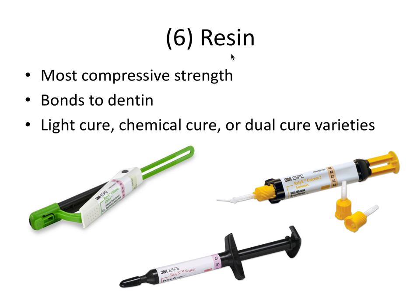Our last category is the resin cement, which offers the most compressive strength of all of them. It bonds to the dentin tooth structure and comes in light cure, chemical cure, and dual cure varieties. RelyX Unicem and RelyX Ultimate are both dual cure cements, meaning they have a light cure and a chemical cure component. The RelyX Veneer cement is a light cure cement only.